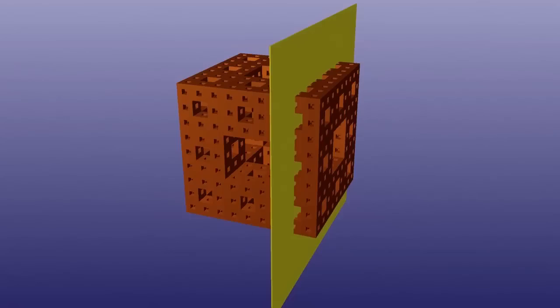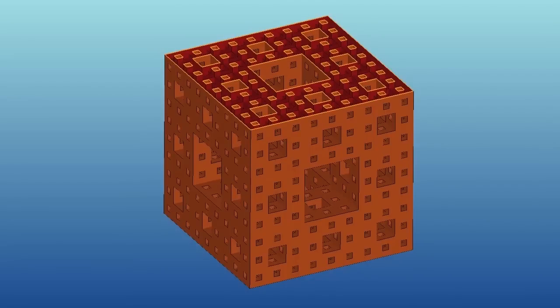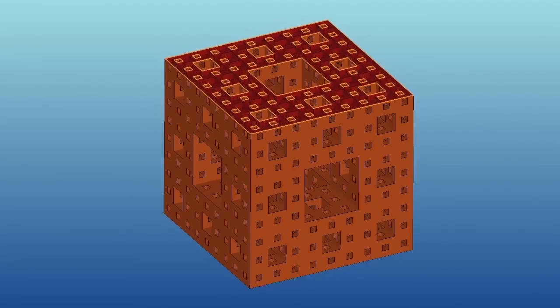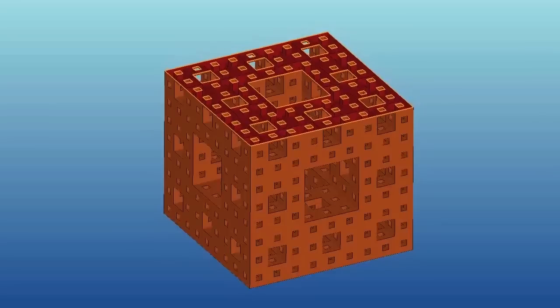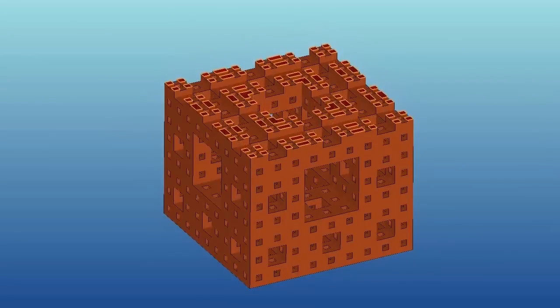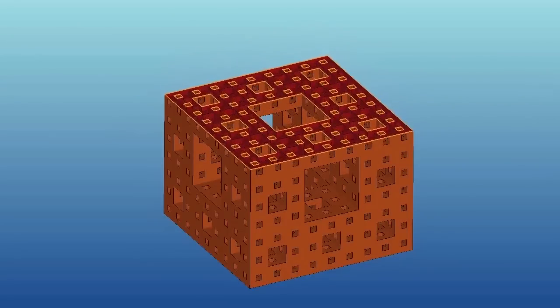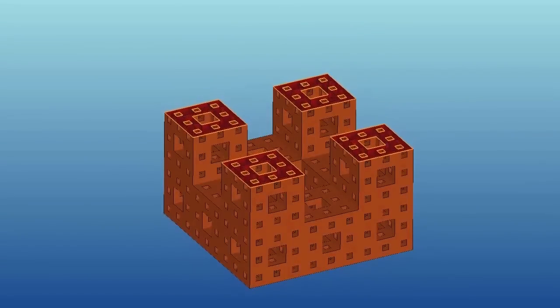Now the surprising thing I want to show you has to do with slicing the Menger sponge. First, let's look at some slices that are not too surprising. If you slice the Menger sponge with the cutting plane parallel to a face, you see a cross section that has solid areas and holes that are either squares or combinations of squares.